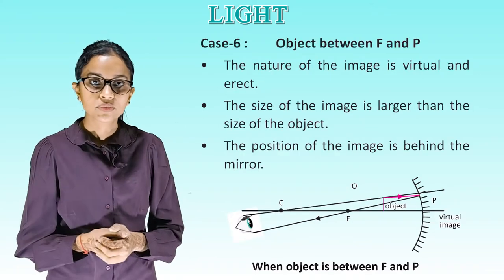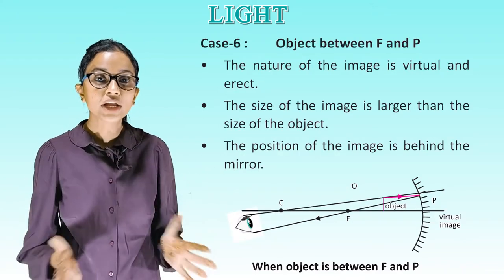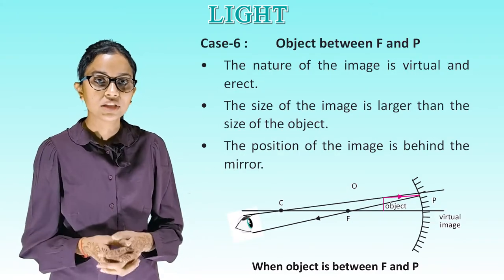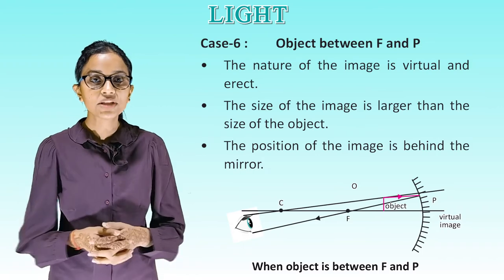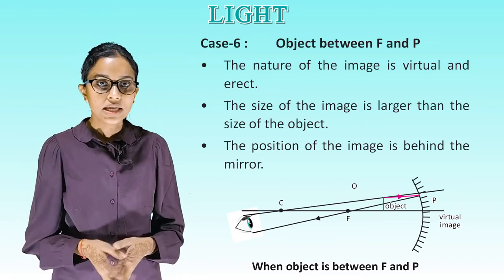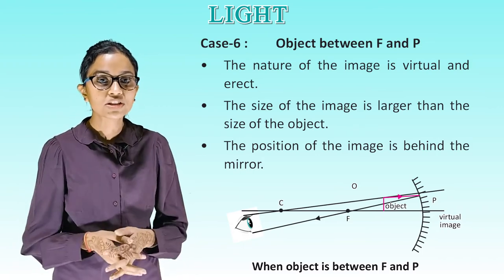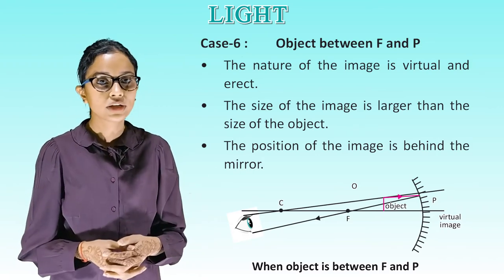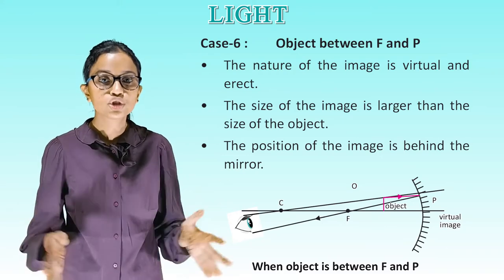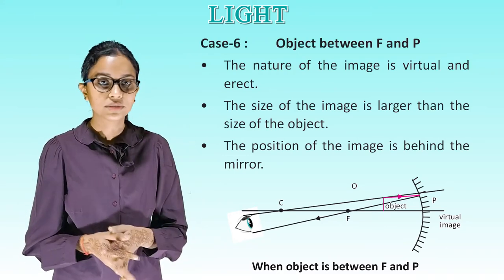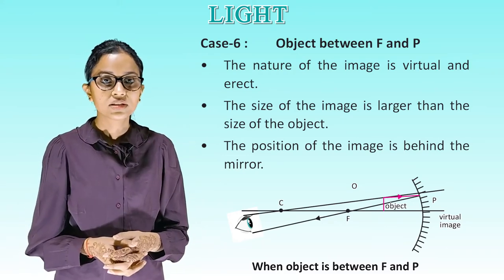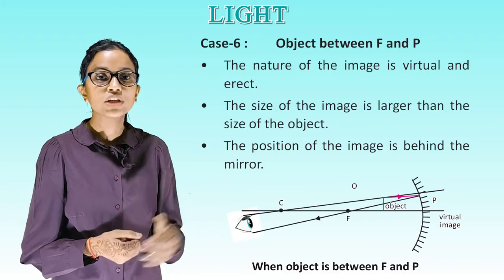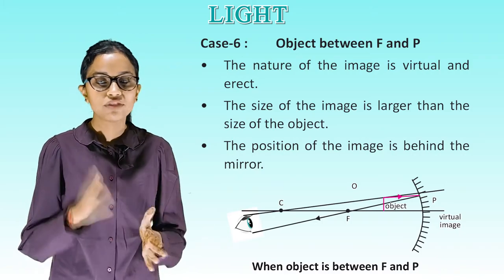Case 6 — object between F and P: the nature of the image is virtual and erect. The size of the image is larger than the size of the object. The position of the image is behind the mirror. This is the diagram showing the object between F and P.